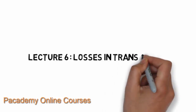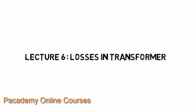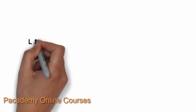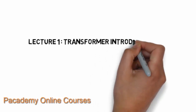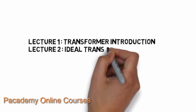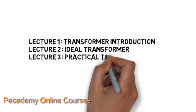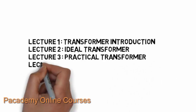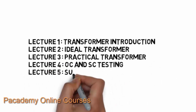This is lecture 6 in learning about transformers, and this lecture is about losses in transformers. What we saw so far was about the transformer interaction — we saw the different types of transformer, also the ideal transformer, the transformer without any losses.